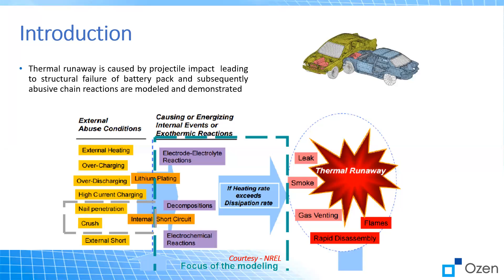Some quick introduction to battery thermal runaway. Thermal runaway in batteries is caused by some sort of external abuse, which can be from external heating, overcharging, or as I'm going to show you today, some sort of impact. This causes internal events and specifically exothermic reactions within the battery, which cause the temperature to increase. If the heat generation of those reactions exceeds the rate at which the battery can dissipate the heat, then you get thermal runaway.